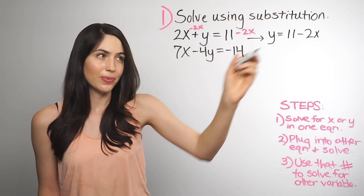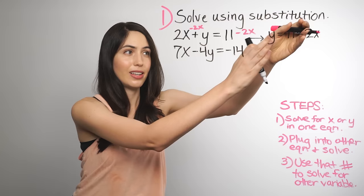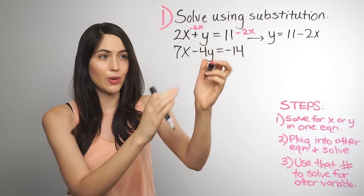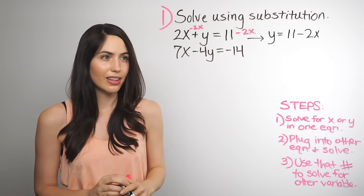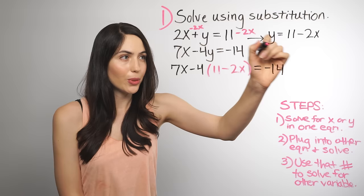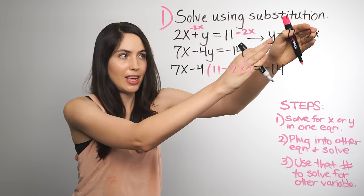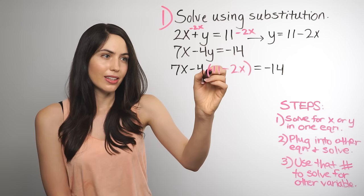So the next step is number 2 — take what you just found for y, this 11 minus 2x, and plug it in to the other equation that you haven't used yet, the second one. Take all of what you found for y and plug it in for y in this equation. This is the substitution part of it. So we took the y expression that we got from getting y alone and plugged it all in, in place of y in the other equation — and it looks like this.